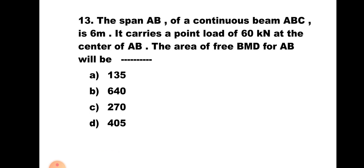Question number 13. The span AB of a continuous beam ABC is 6 meter. It carries a point load of 60 kilonewton at the center of AB. The area of free BMD for AB will be: A. 135, B. 640, C. 270, D. 405. The maximum positive bending moment is WL/4. Using area = ½ × base × height = ½ × L × (WL/4) and substituting values gives 270. Hence the correct answer is C, 270.